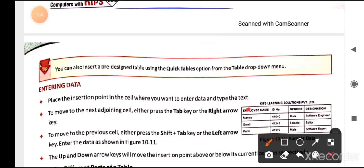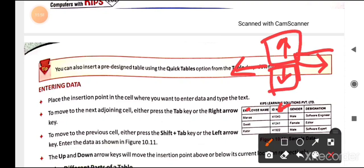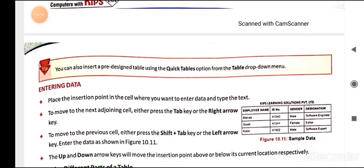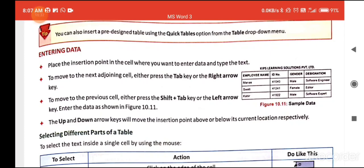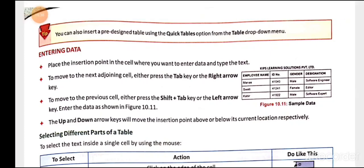To move to the next cell, press the Tab key or the right arrow key. To move to the previous cell, press Shift + Tab or the left arrow key. The up and down arrow keys will move the insertion point above or below its current location within the table.